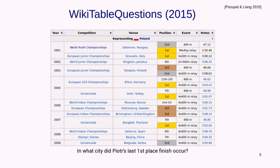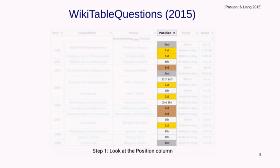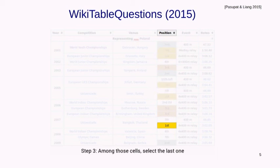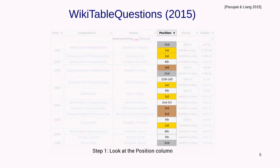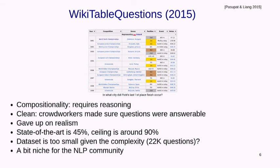We started with 100,000 questions but whittled it down to only 6,000 because of mismatch between questions and the knowledge base. It ended up being a noisy dataset without much compositionality. Two years later, we created WikiTableQuestions — a much cleaner and compositional dataset. You'd have questions like, 'In what city did Pewter's last first-place finish occur?' and look at a table to reason about it. It was compositional and clean, but the ceiling is around 90% while state of the art is only around 45%.